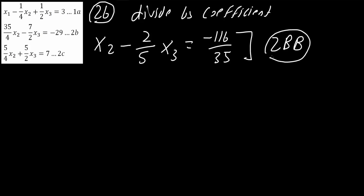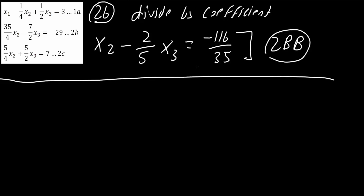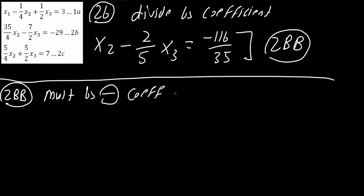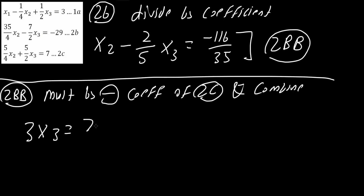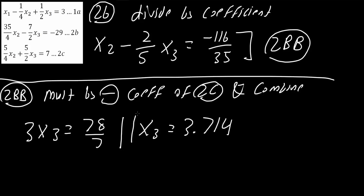Next, we multiply equation 2bb by the negative coefficient of x2 in equation 2c, which is negative 5/4, and combine it with equation 2c to eliminate x2. This gives us 3x3 equals 78/7. Dividing both sides by 3, we find x3 equals 3.714, which is the final answer for x3.